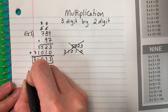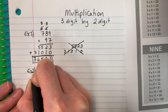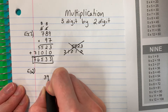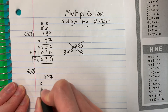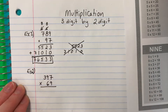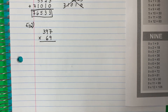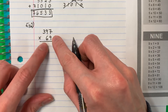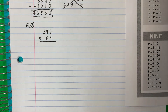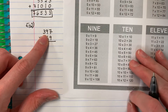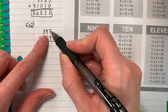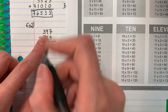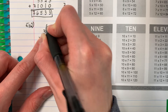Let's go ahead and do example two. Ejemplo dos. Three hundred ninety-seven times sixty-nine. Trescientos noventa y siete por sesenta y nueve. So we're going to go ahead and focus on the nine first. Necesitamos enfocar en el nueve primero. Ignore the six. Vamos a ignorar el seis por ahora. Nine times seven is sixty-three. Sesenta y tres. You put the three here, el tres aquí, and the six here, el seis allí.